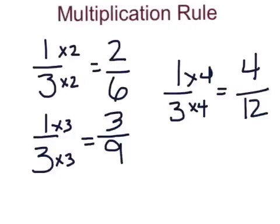You do not always have to go in numerical order the way I did, where I multiplied times two, then times three, then times four. You can multiply the numerator and the denominator by any number you would like. It's completely up to you. I just went with two, three, and four because they were the simplest ones for me to do.